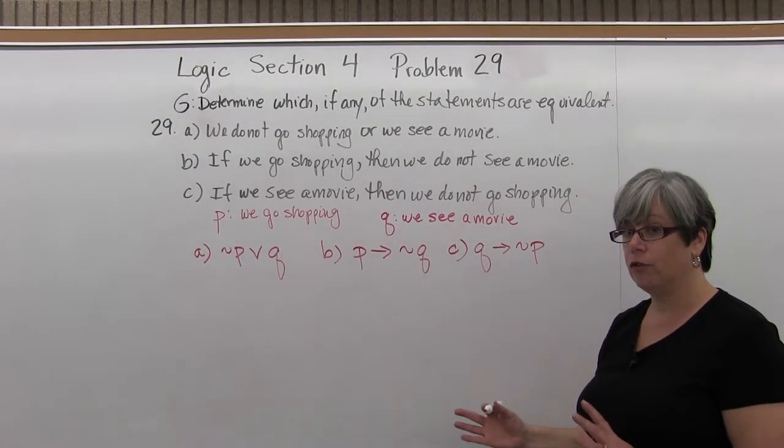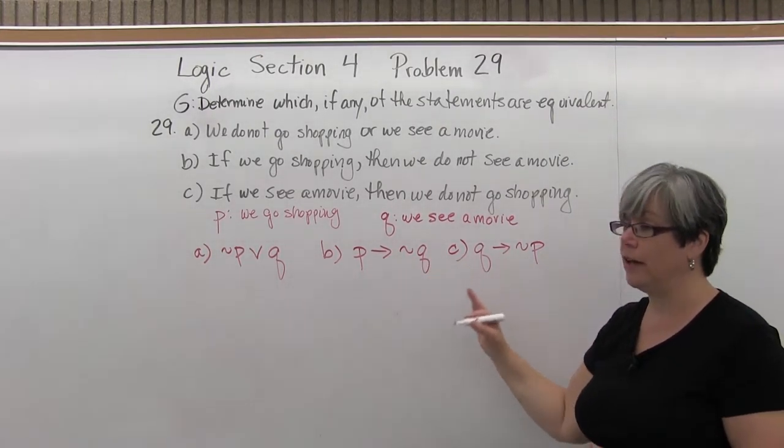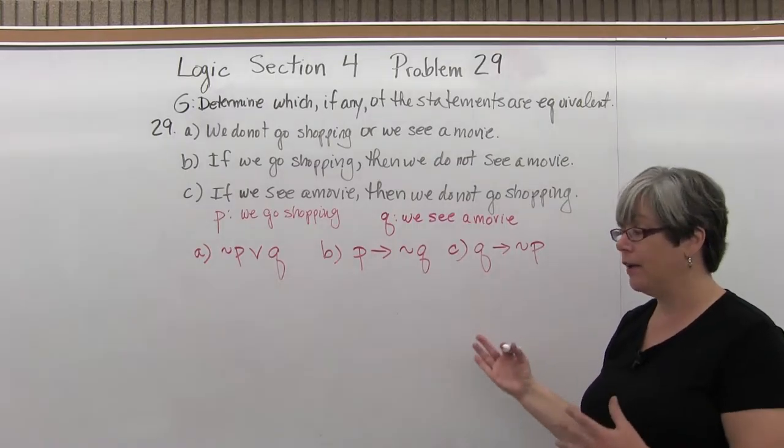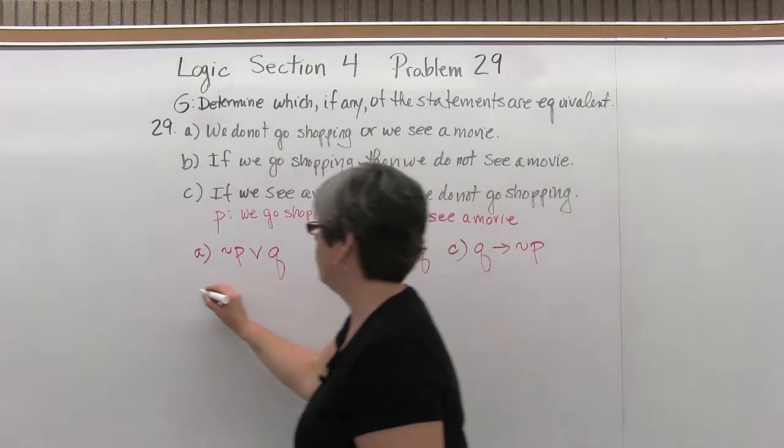Sometimes you can use DeMorgan's Laws or some of the other laws to see equivalence right away. Failing that, you can make a truth table. I'll do the truth table.